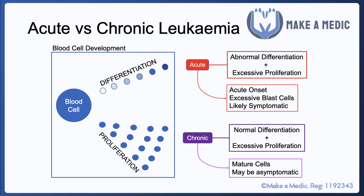The consequences of bone marrow failure would namely be anemia, increased risk of infections due to a lack of functional white blood cells, and thrombocytopenia — so an increased risk of bruising and bleeding.